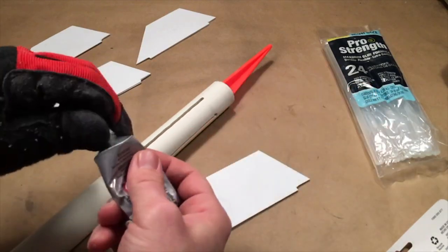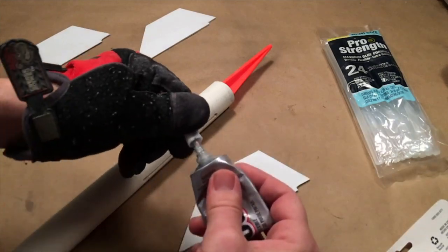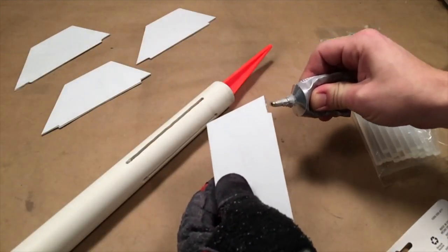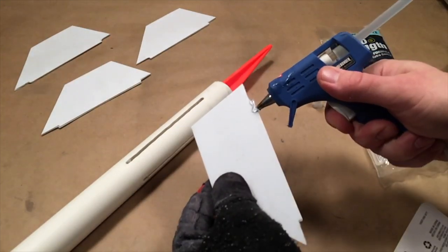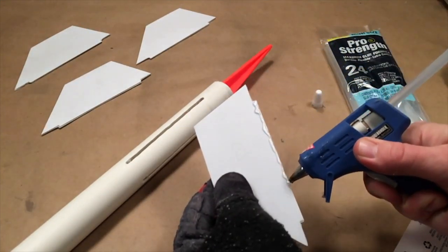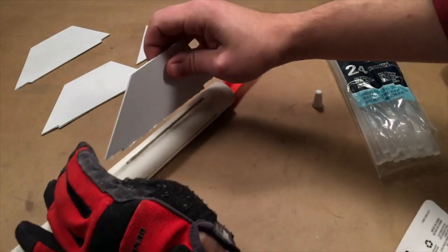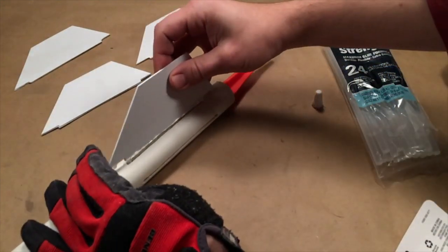Place some E6000 adhesive on the stake and place it in the PVC pipe. I will secure the fins with a combination of E6000 and hot glue. I placed E6000 on the two edges that contact the outside of the PVC pipe and hot glue on the fin inserts. Insert the fins and try to get them perpendicular with the PVC pipe.